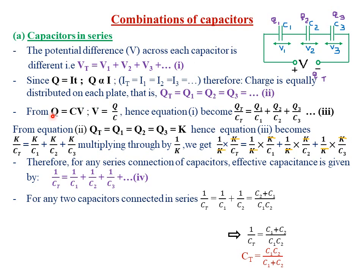We also derived a formula for capacitance, whereby we said that capacitance can be given by: from the formula of capacitance, charge Q can be given by CV — that is, the capacitance multiplied by the potential difference gives you the charge. But I want to derive an equation for the effective or the total capacitance through a series combination of capacitors. From this formula, I want to make V the subject: V equals Q over C.